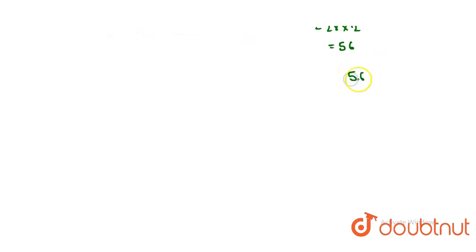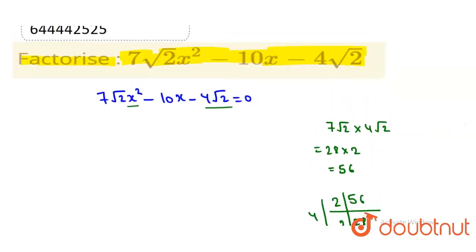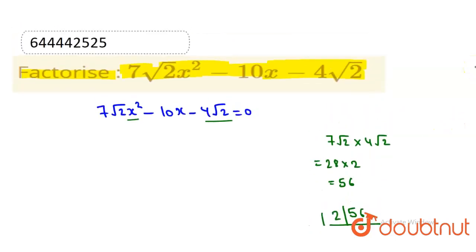Now we factor 56. In the next step, this is 2, 28, then 14, 7, and 7. So 14 and 4 are the factors which we multiply to get 56, and if we subtract them we get 10.